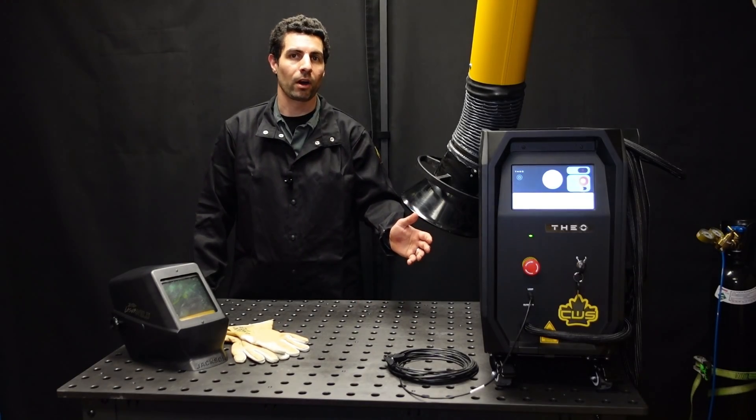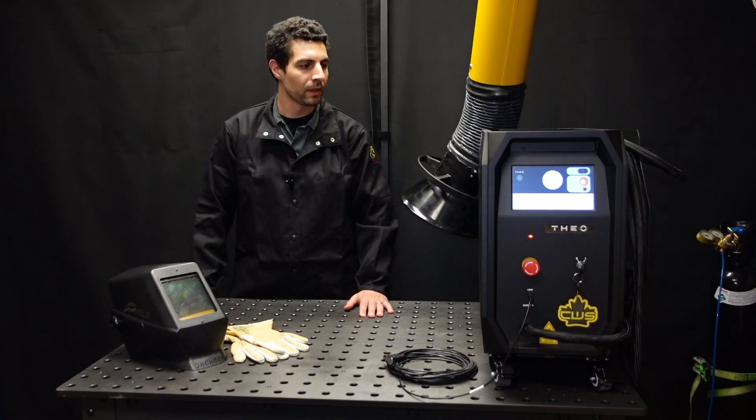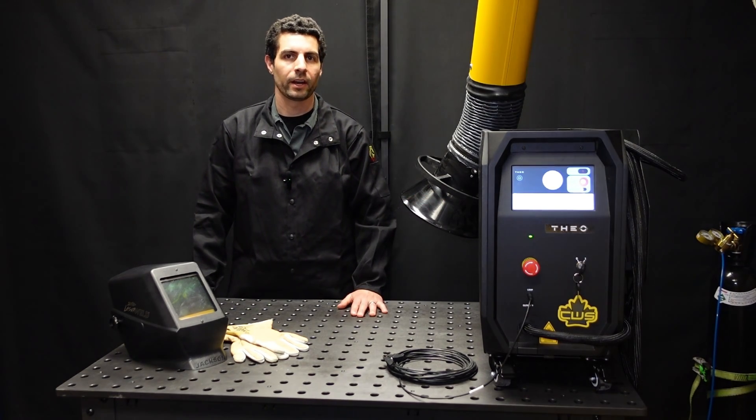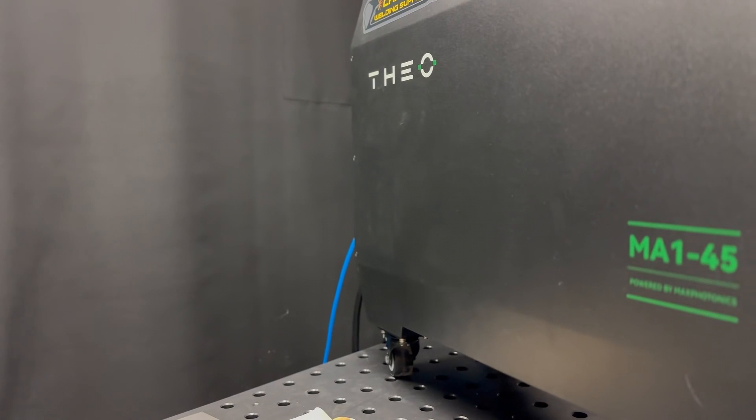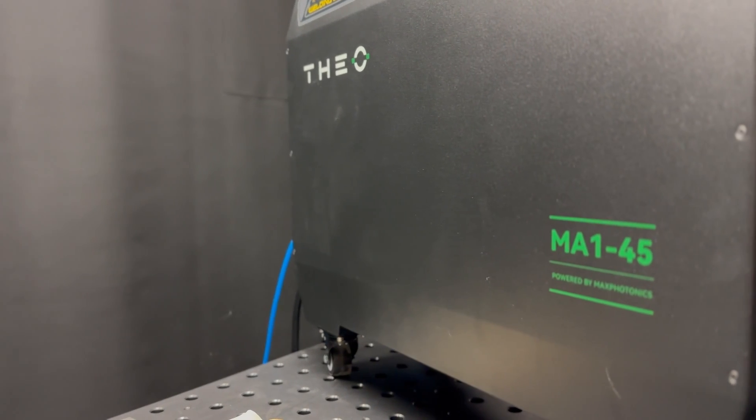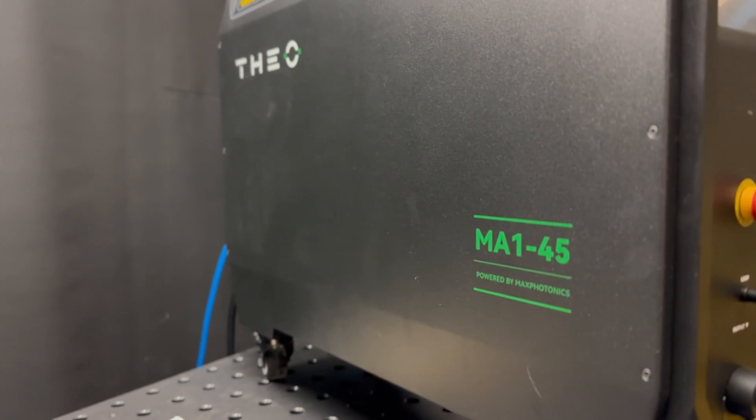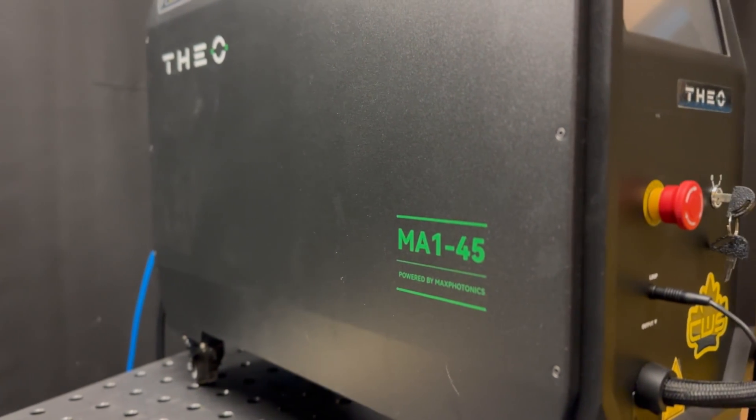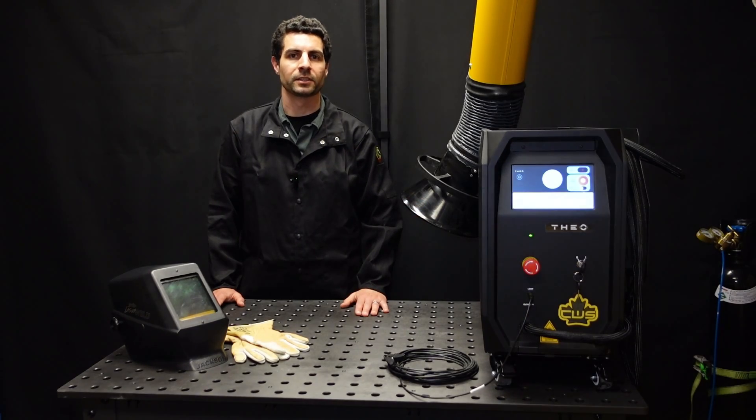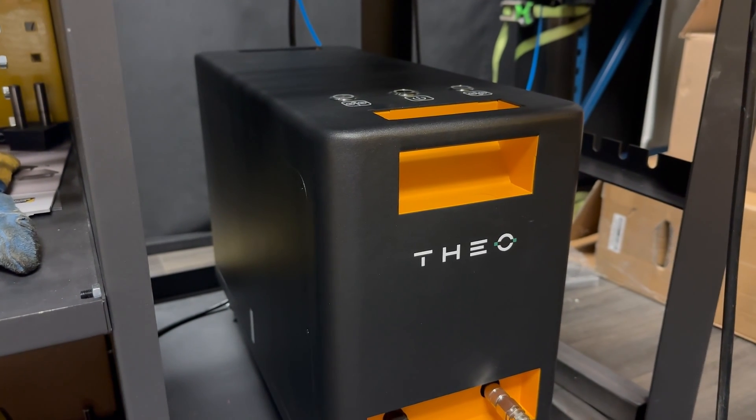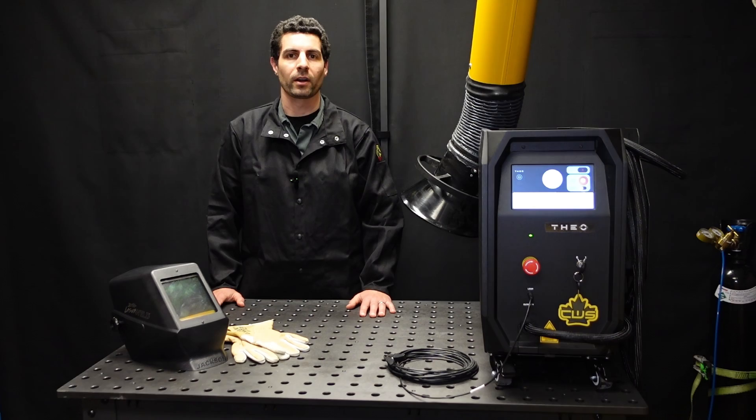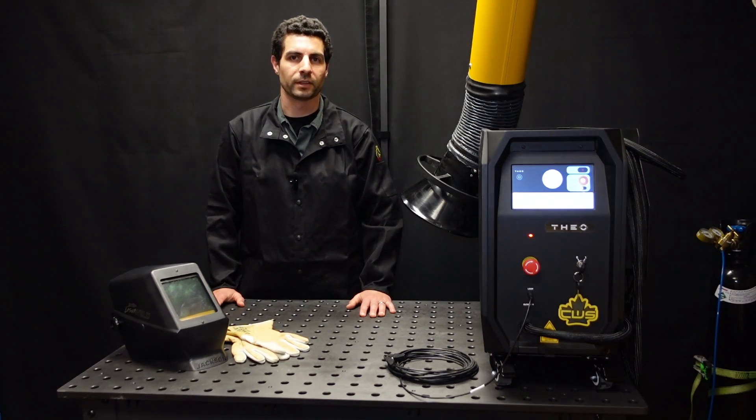Today we're taking a look at a new product that we're offering at Canada Welding Supply. This is the Thio Handheld Laser Welding Machine built by Max Photonics. There's a lot of excitement right now about handheld laser welding machines, and we wanted to make sure that we offered a product that we could stand behind and from a manufacturer that is there to support the customer too. We determined that this product here would be something that we'd be proud to sell, and we're excited to share with you today.